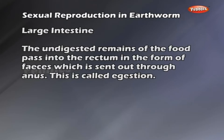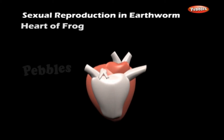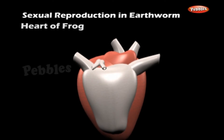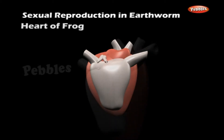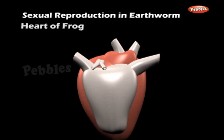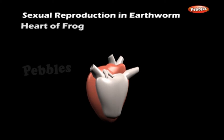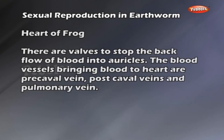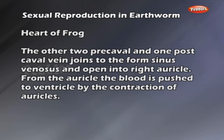The heart of the frog is a three-chambered muscular organ. It has two auricles and one ventricle. The auricles are separated by an interauricular septum, and the auricles and ventricle are separated by an auriculoventricular septum. The blood vessels bringing blood to the heart are the precaval veins, postcaval veins and pulmonary vein. The pulmonary vein brings oxygenated blood to the left auricle. The two precaval and one postcaval veins join to form the sinus venosus and open into the right auricle.